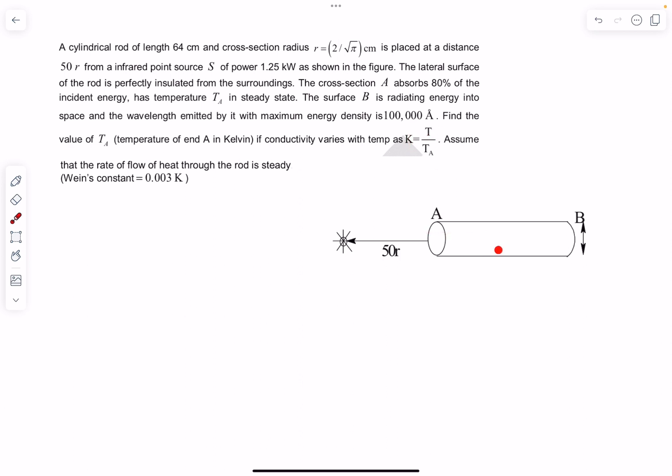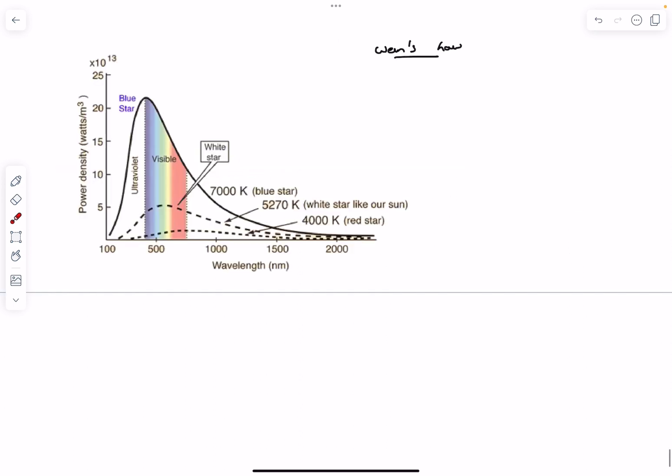It is dependent on the temperature of that particular location. And we also have to assume that rate of heat flow through the rod is steady. This is a plot between the power density of the radiation emitted by a black body and it's plotted against different wavelengths of the electromagnetic radiation. This plot corresponds to a temperature of 4000 Kelvin, this plot to 5000 Kelvin, and this plot to 7000 Kelvin.